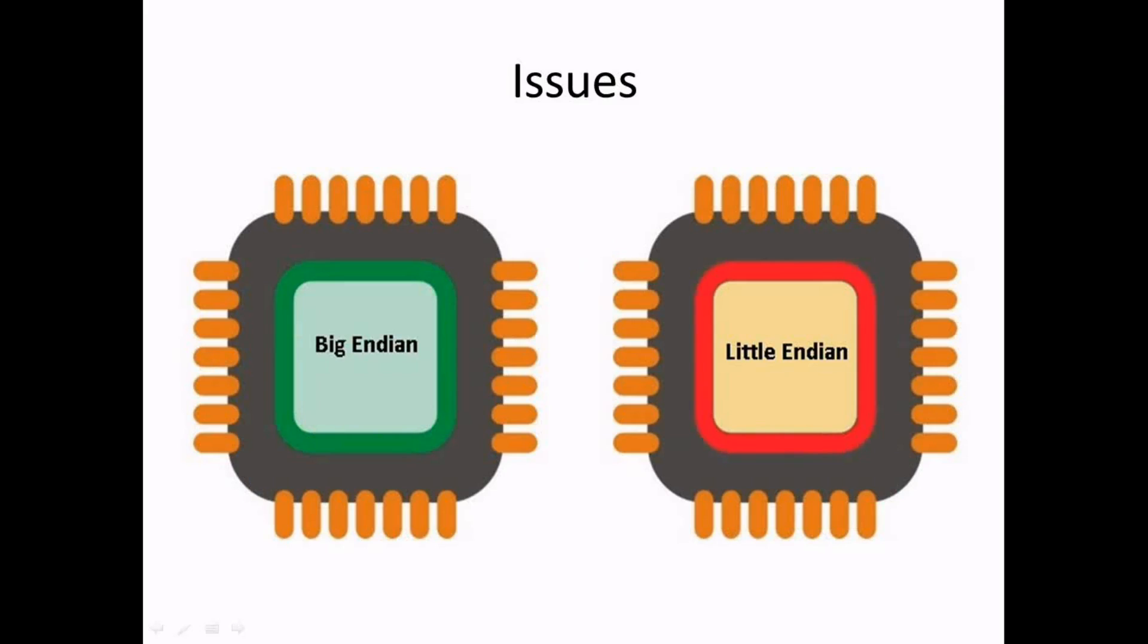The issues are seen when two CPUs of different architectures try to communicate with each other, as in embedded systems. Similarly, a network may contain computers with different endianness trying to communicate. In such cases, the data received by the recipient would be the inverse of the data being sent by the sender.